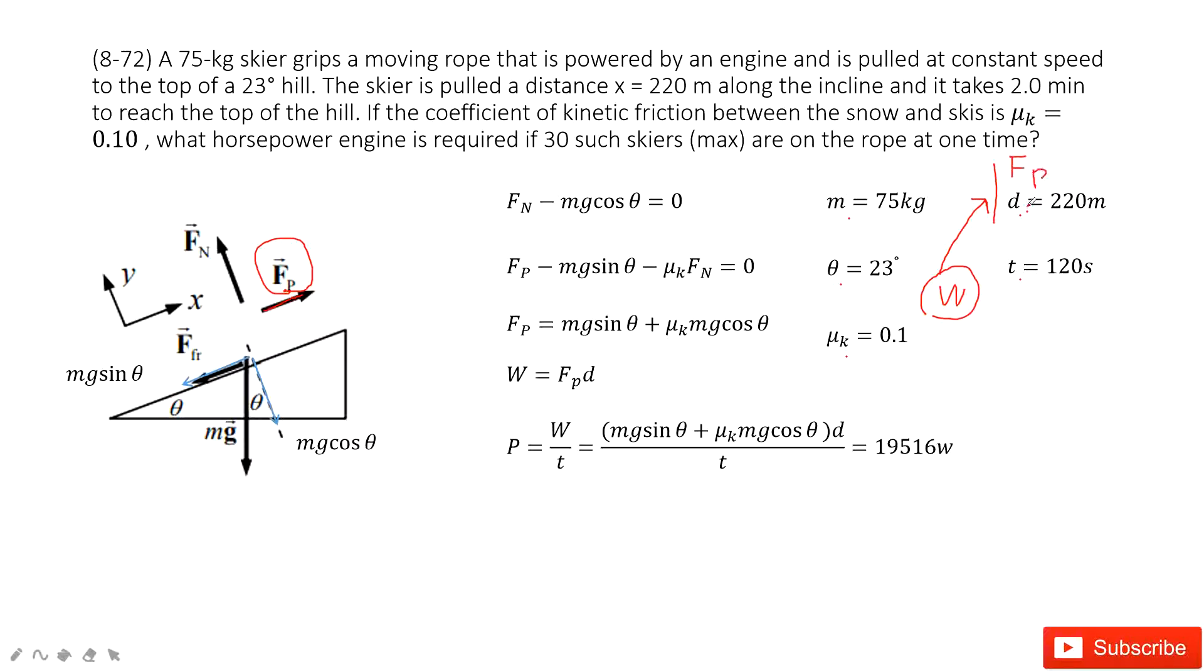This force comes from the machine acting on the person. So Fp times d is work, and also work can equal to P times t. So we need to find this power. It looks like we need to find Fp first.